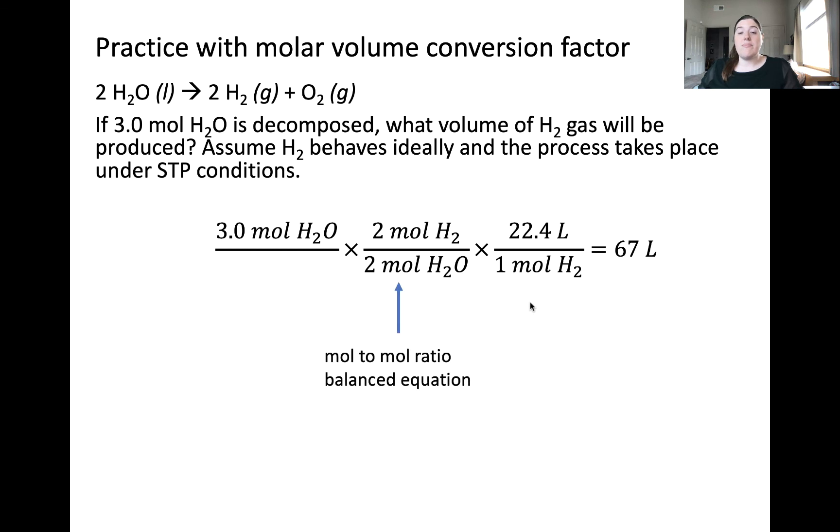What we can do is take our 3 moles of water and convert to moles of hydrogen using the multiple ratio from the balanced equation. In the next step, we can use the molar volume of hydrogen at STP conditions because it's stated that hydrogen behaves as an ideal gas. Therefore, we know one mole of hydrogen will occupy 22.4 liters under STP conditions. This is the molar volume.